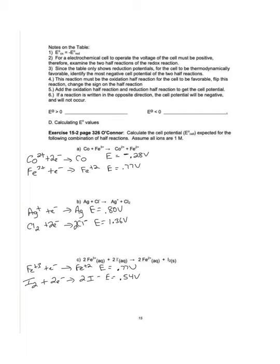Turning to page 2: in order for a cell to be a voltaic cell, it must be thermodynamically favorable. In order to be thermodynamically favorable, we must get a combination of reduction and oxidation potentials creating a cell voltage that is positive. Therefore, if the voltage of the overall cell is greater than zero, it is a voltaic cell and it is spontaneous — this reaction will naturally occur.